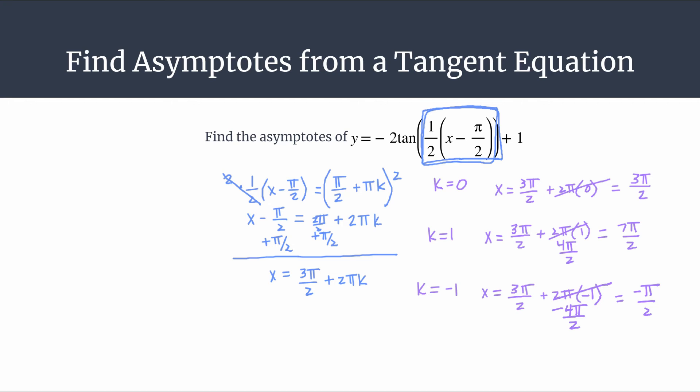So notice that is to the left of the k equals 0 asymptote right here by exactly the period 2 pi, because we know an asymptote happens exactly once a period. Okay, so let's just take a look at a sketch of this equation and see that what we found here is exactly what happens.